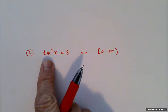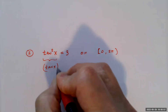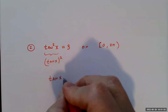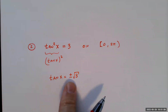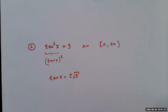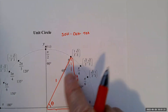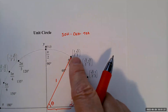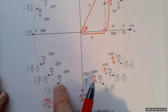For tan²(x) = 3, remember this means (tan x)² = 3. To solve for tangent of x, take the square root — but you must include both the positive and negative roots. So we're actually looking for when tangent x equals positive √3 or negative √3.